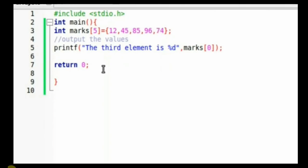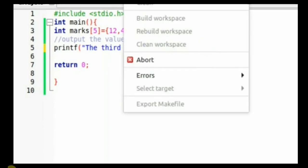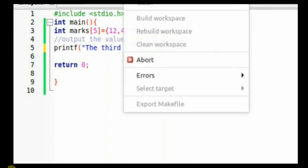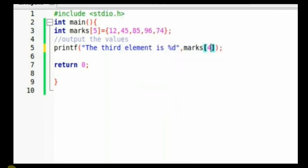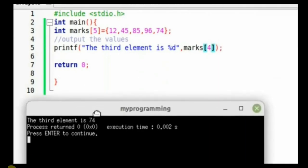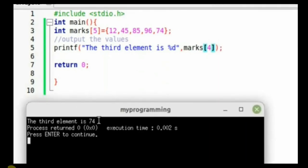If we change it to 4 again, we're going to get the very last value because the size is 5, and counting from 0 to 4 makes it 5. Therefore, that fetches us the very last element, and that is 74, as you can see on the screen.